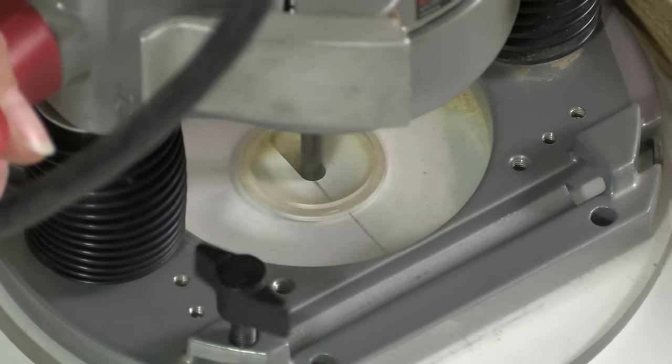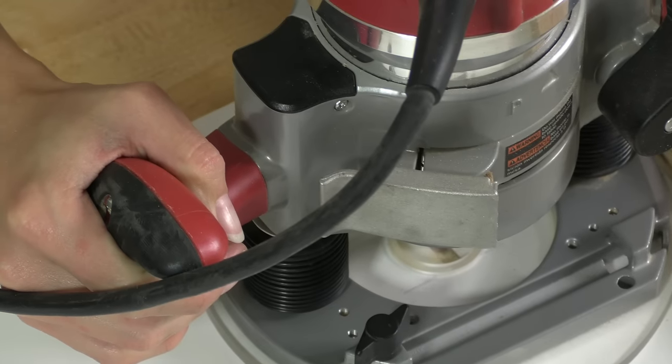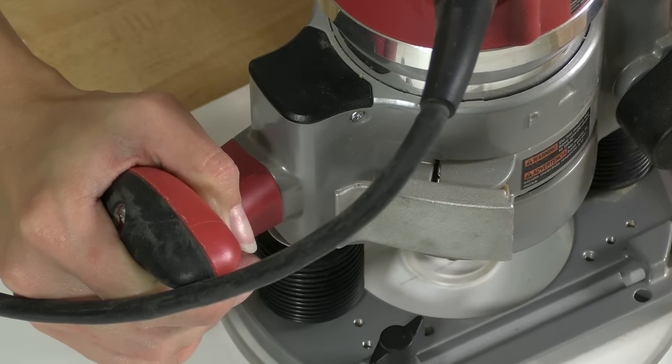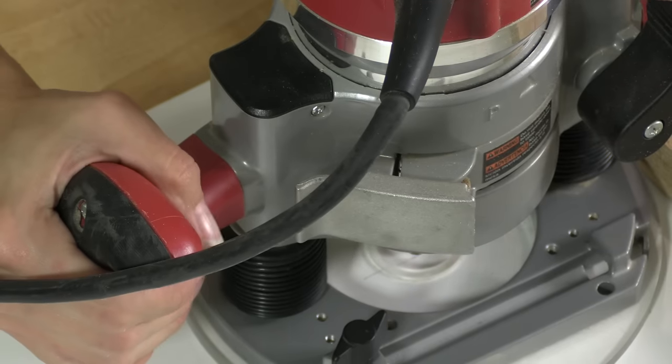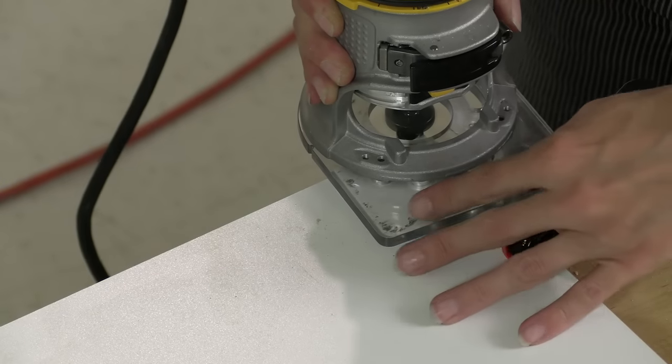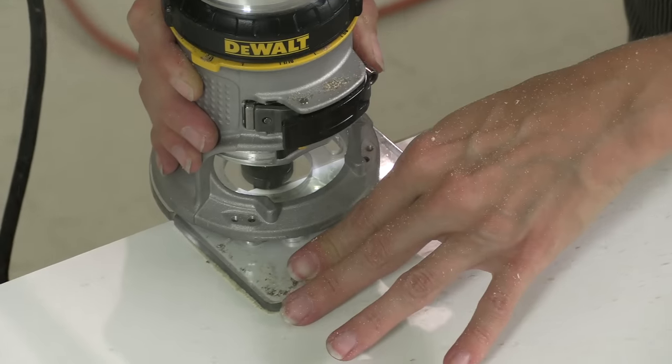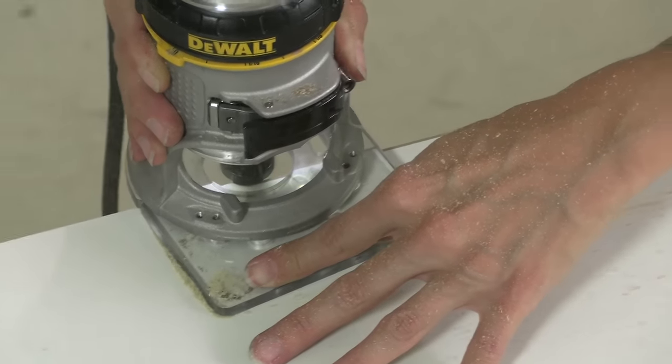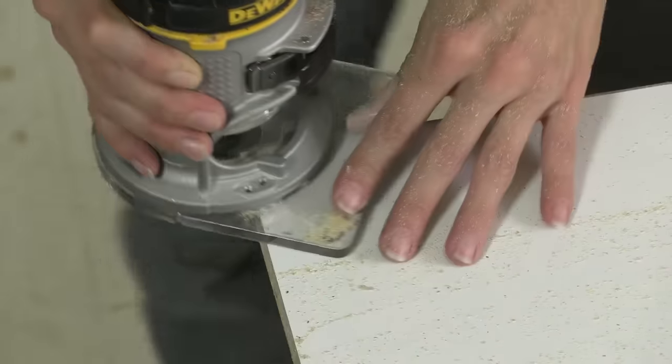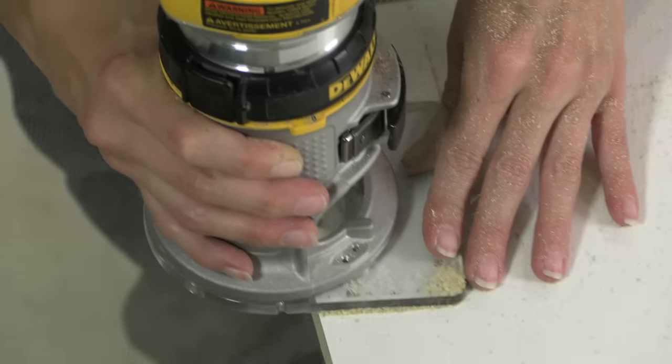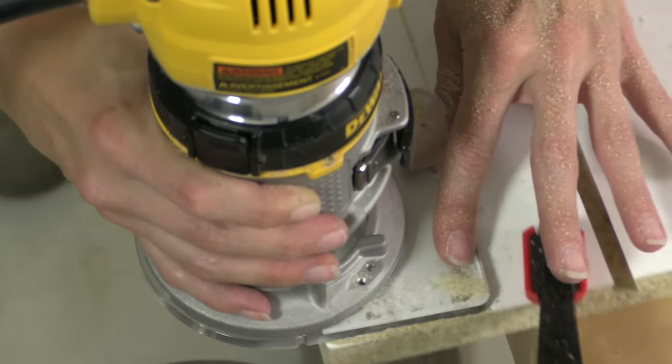I will do the same to the opposite edge. Before I attach the tabletop, I'll throw a big round over around all the edges top and bottom, and that is to avoid any of those nasty melamine splinters or cuts on your hands later.